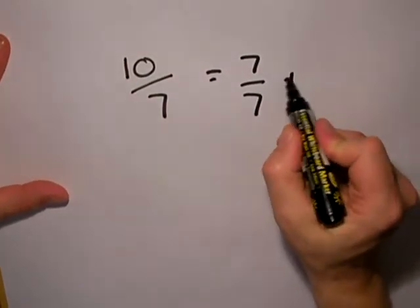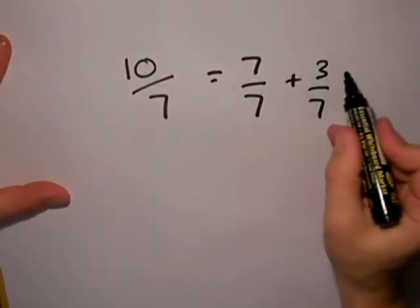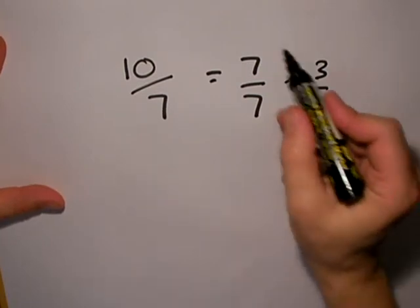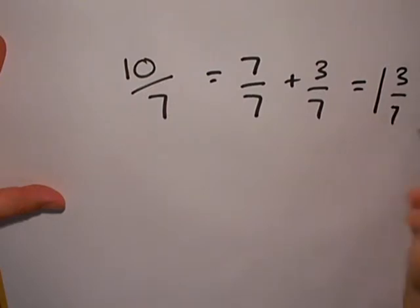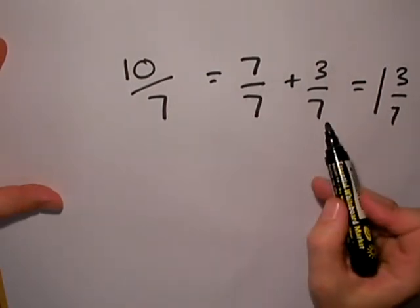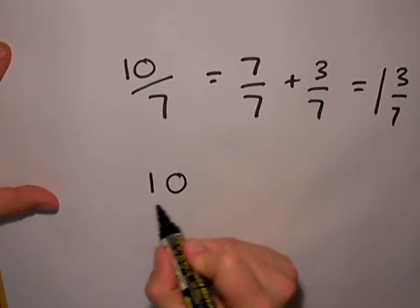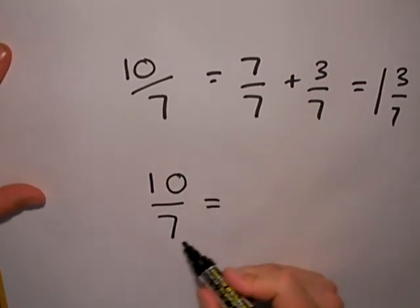7/7, and what would I have left? I'd have 3/7. So altogether I've got one whole one and 3/7 left over. I wouldn't normally write this bit here. I would just normally write 10/7 and think to myself, how many sevens can I make up? How many whole ones can I make with ten?